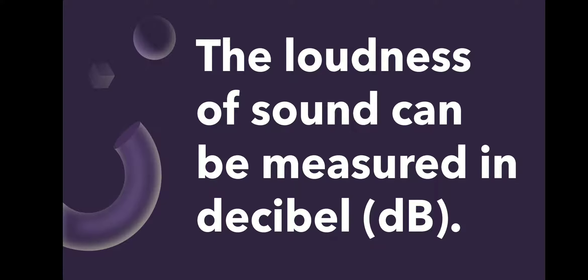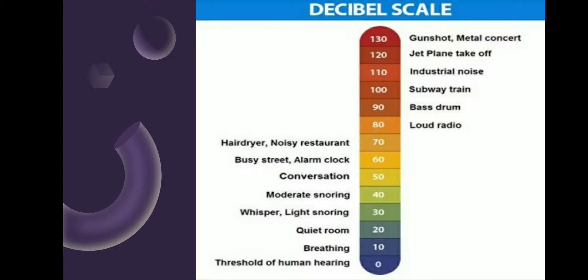The loudness of sound can be measured in decibels. Decibel is a relative unit of measurement of the loudness of sound, corresponding to one-tenth of a bell. One decibel equals 0.1 dB. Sound energy is measured in units of pascal and decibel.